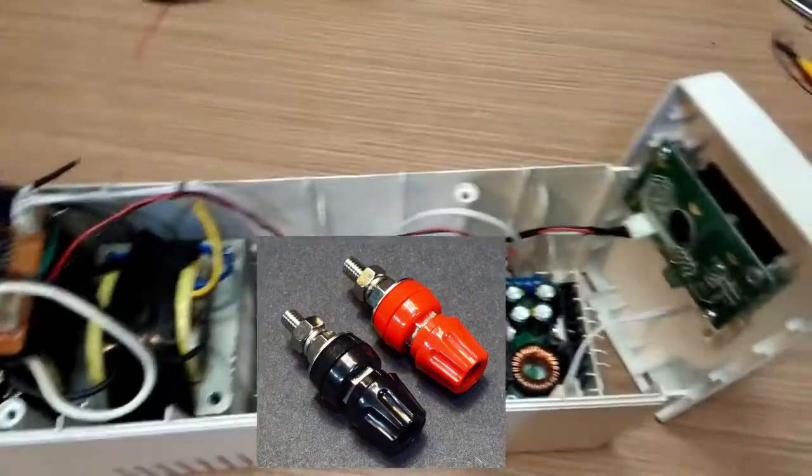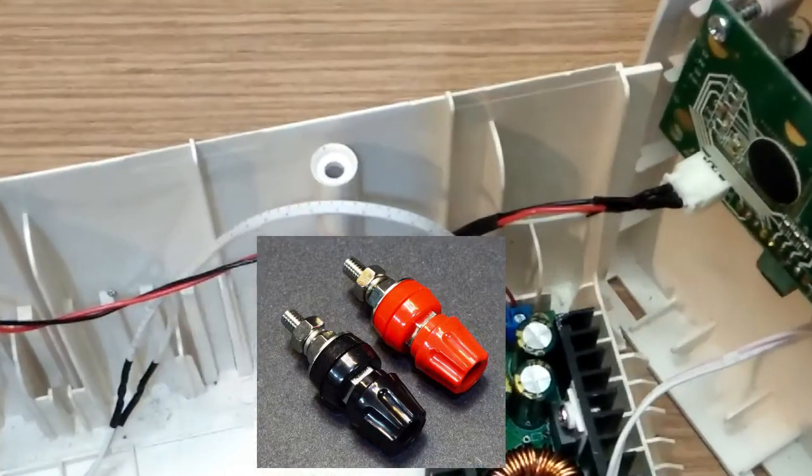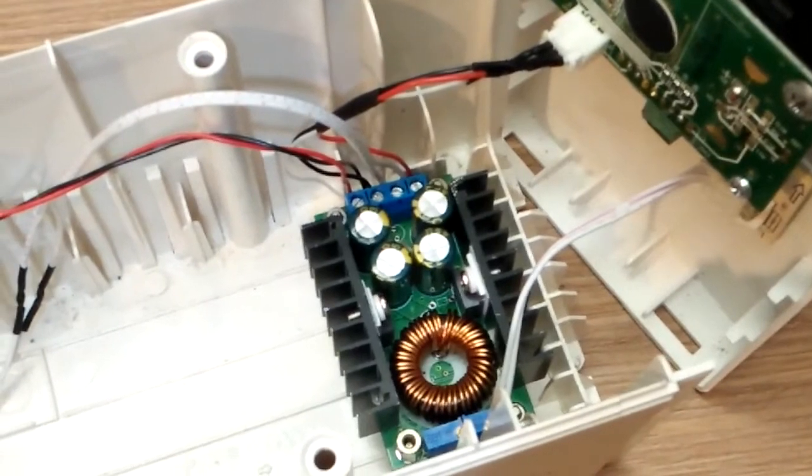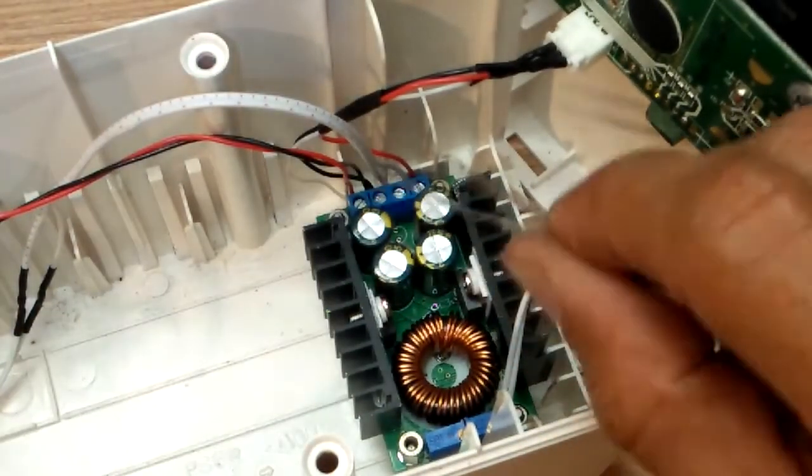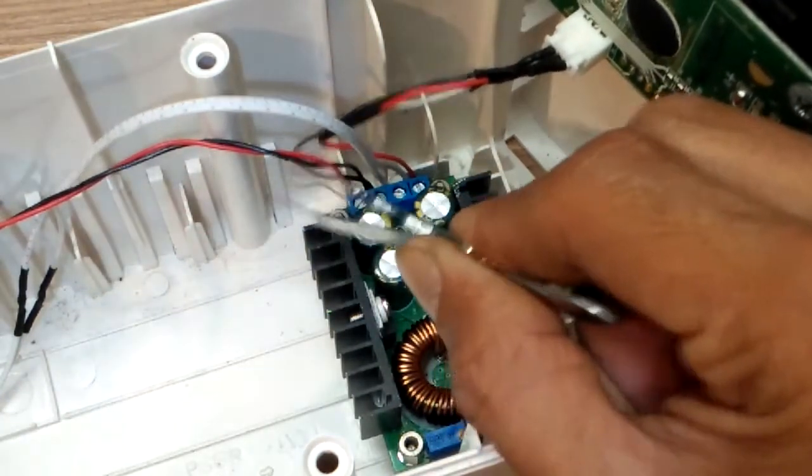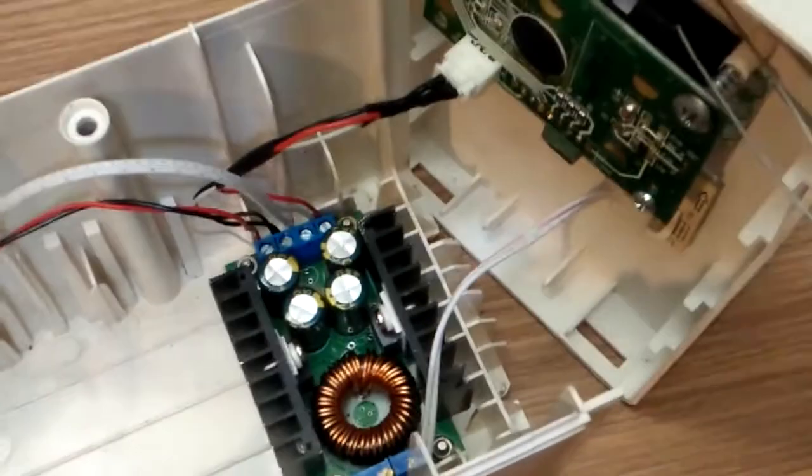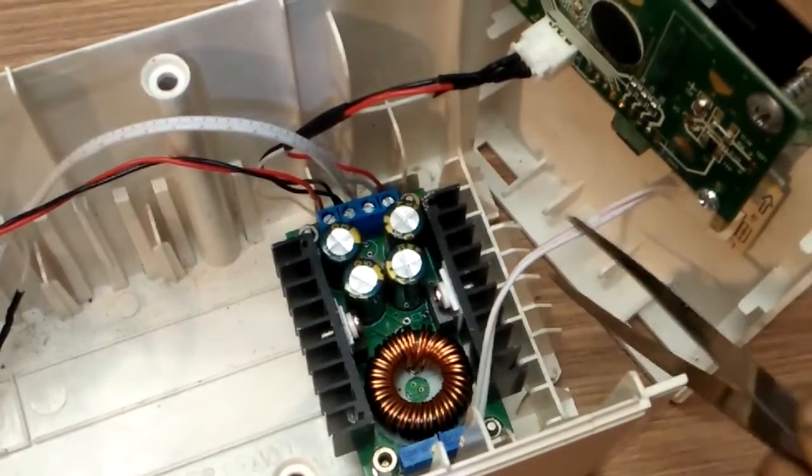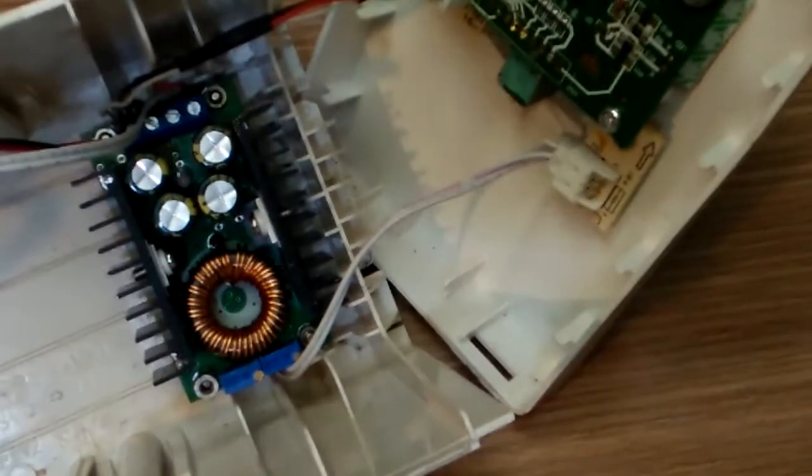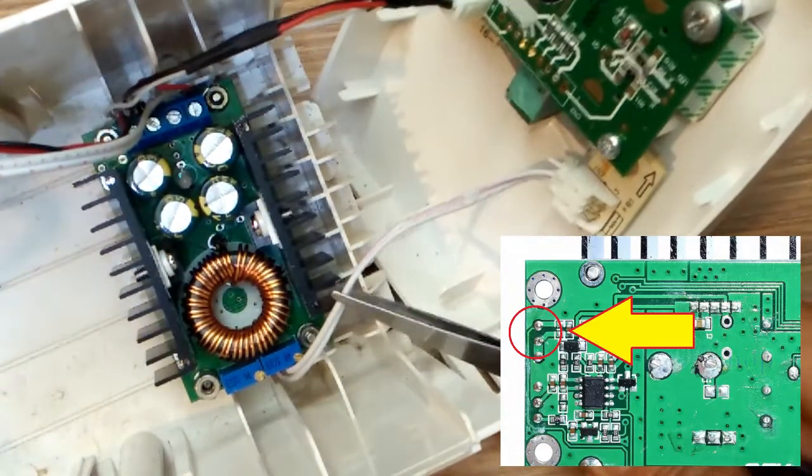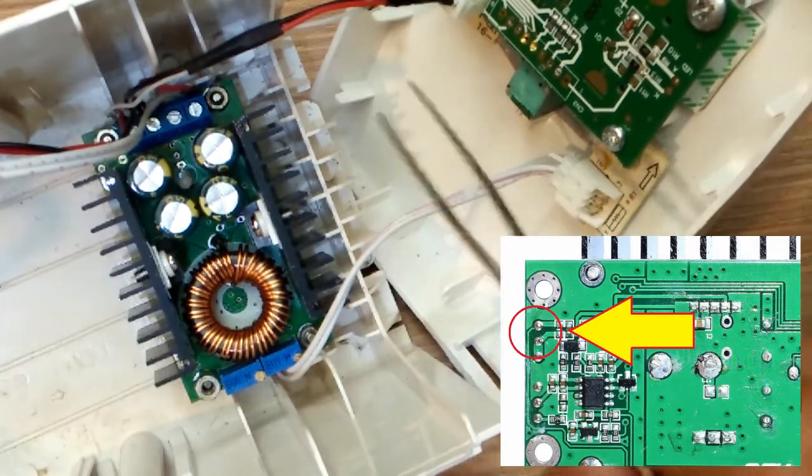You can also use banana plugs in the front panel like any other bench power supplies. The other wires coming out of the module are these that go to our small voltmeter. Now the DC to DC module output voltage is adjusted by a trimmer resistor in the PCB board. What I did is simply connect the potentiometer in parallel to the trimmer resistor so that I can adjust the voltage through the front panel.